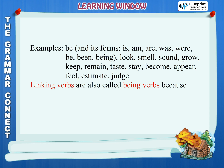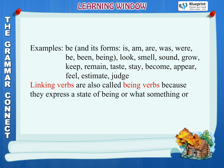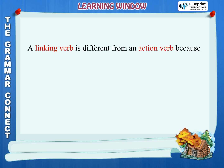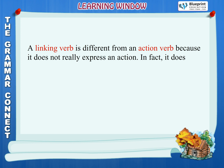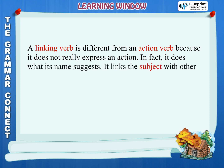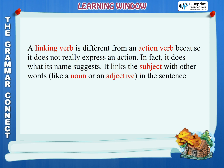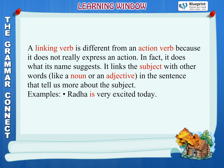Linking verbs are also called being verbs, because they express a state of being, or what something or someone is like. A linking verb is different from an action verb because it does not really express an action. It links the subject with other words, like a noun or an adjective in the sentence, that tells us more about the subject. Examples: Radha is very excited today. She appears happy.